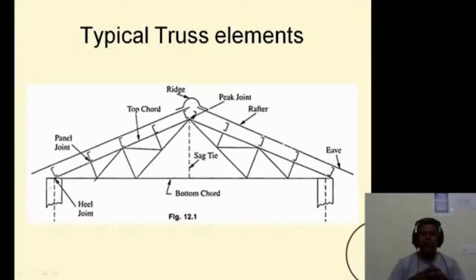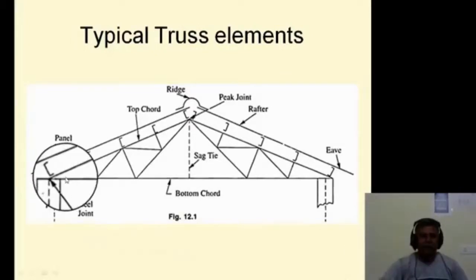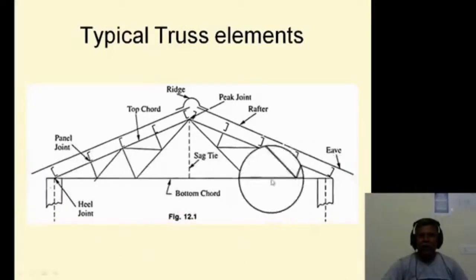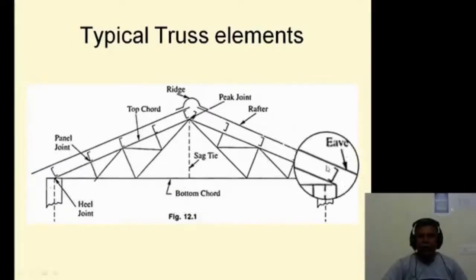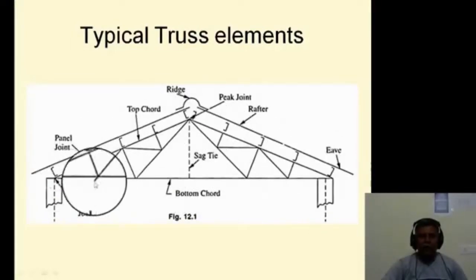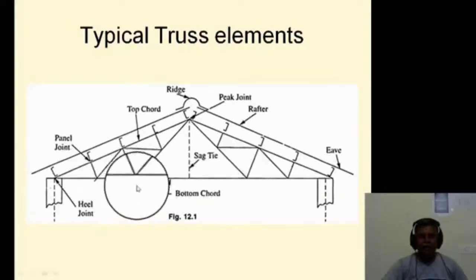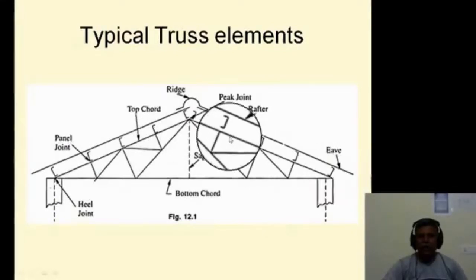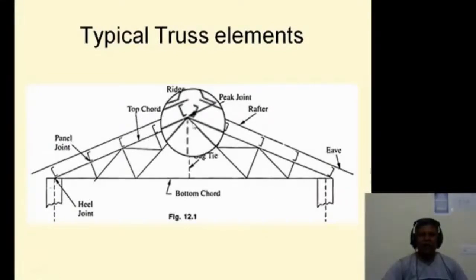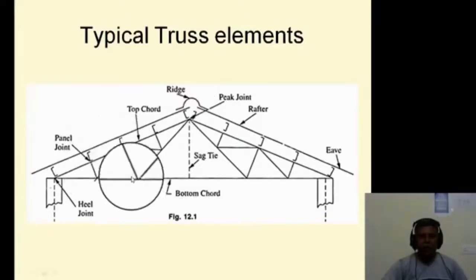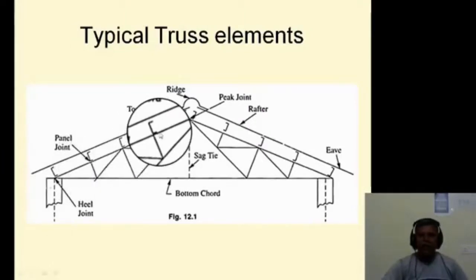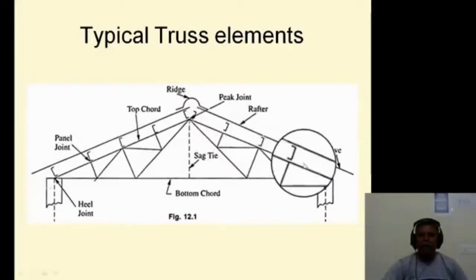This figure shows a typical sketch of the truss. It consists of different parts. The horizontal longitudinal member at the bottom is called the bottom chord member, also called the principal tie. The top chord member is also called the principal rafter. The members other than the top chord and bottom chord are called web members. Each joint is called a panel point in the roof truss.